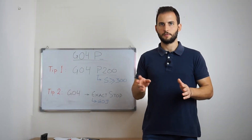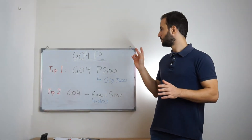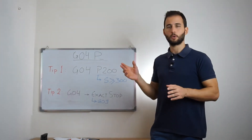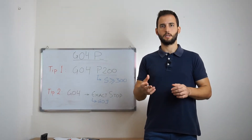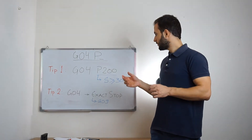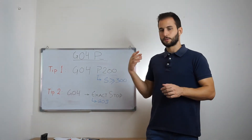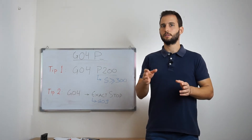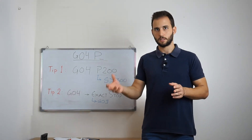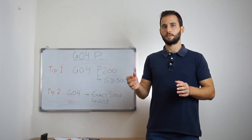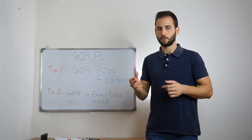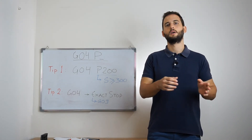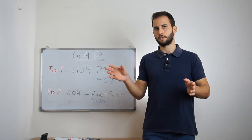I'm about to give you two tips regarding the programming of the dwell command. First of all, every time you want to program dwell, you have to calculate the appropriate time given the spindle speed. I know that this could lead to longer programming times, as every time you want to program dwell you have to calculate the appropriate time given the specific spindle speed at the moment.